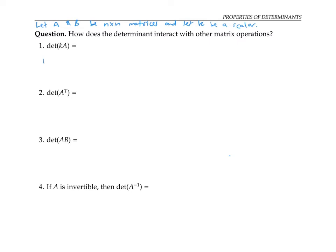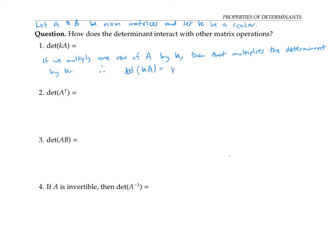We saw in a previous video that multiplying one row of A by k multiplies the determinant by k. If we multiply the whole matrix A by k, that's like multiplying the first row by k, then the second row by k, and so on through all n rows. So that multiplies the determinant by k a total of n times. Therefore, det(kA) = k^n times det(A), where n is the number of rows of A.